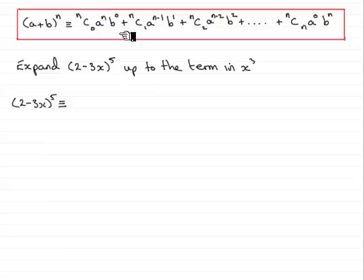So, according to the formula here, we're going to have nc0, so it will be 5c0. Then, the a value, which is 2, to the power of n, which is 5. And then, the b term, minus 3x.